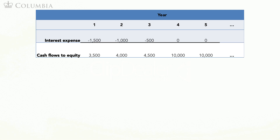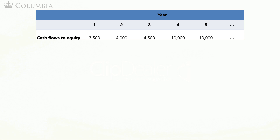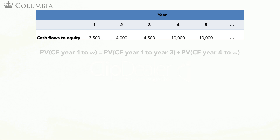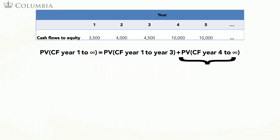The cash flows equity holders receive are $3,500, $4,000, and $4,500 in years one, two, and three, and starting in year four, they are $10,000. Note that starting in year four, we have a perpetuity. To find the present value of this cash flow stream, we do two separate calculations: one is the present value of the first three cash flows, and the second is the present value of the cash flows that start in year four.